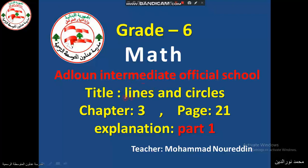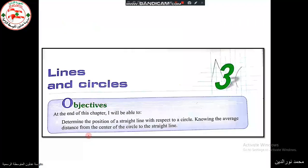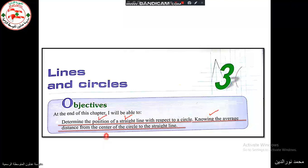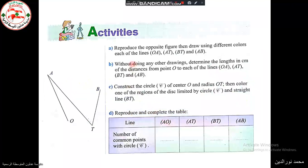Hello Grade 6, our lesson today is Lines and Circles, Chapter 3, page 21 in our books. The objective of this lesson is to determine the position of a straight line with respect to a circle, knowing the distance from the center of the circle to the straight line.